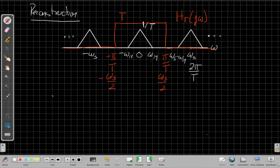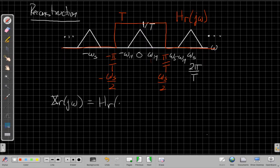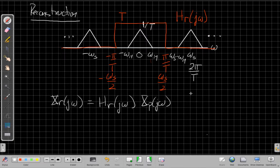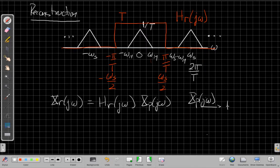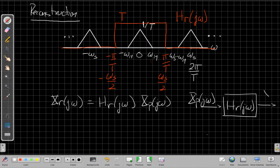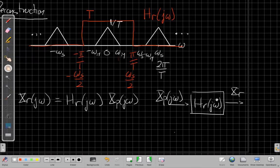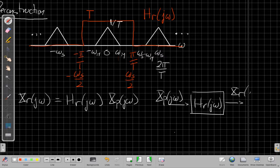In equations, we're saying I want to create a reconstructed signal, x r of j omega, is going to be the result of applying this reconstruction filter in frequency, multiplying it with x p of j omega. If I want to think of this as in block diagram form, I'm taking that pulsed signal and putting it through an LTI system that is the reconstruction filter shown as the red line above. And then what I get out will be x r of j omega.